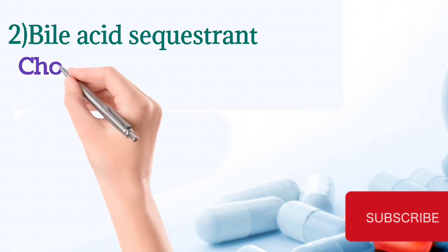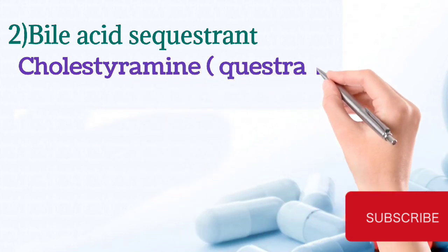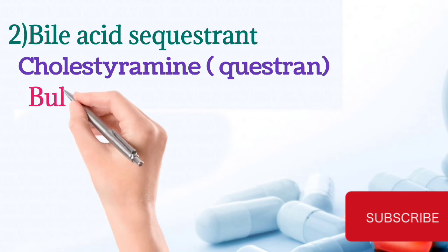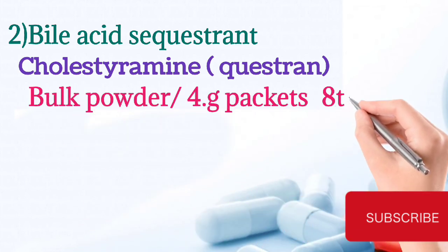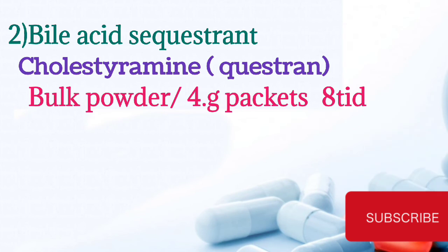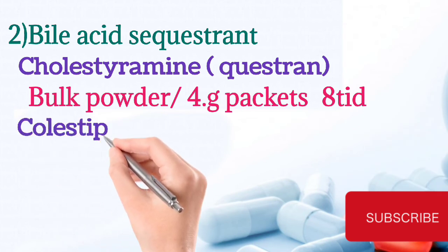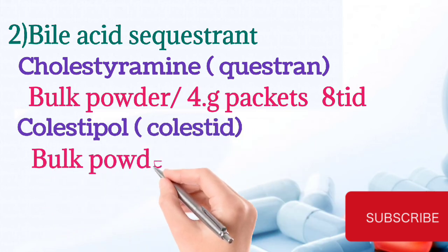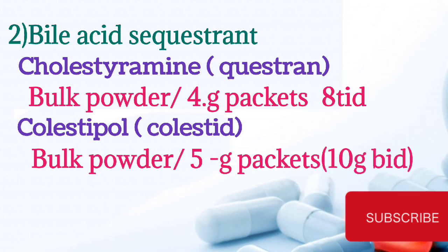Second class is bile acid sequestrants or bile acid resins. These drugs come in powder dosing. First is cholestyramine, brand name Questran — patient can take bulk powder 4 gram packet, 8 grams three times a day. Next is colestipol, brand name Colestid — bulk powder comes in 5 gram packets, 10 grams two times a day.